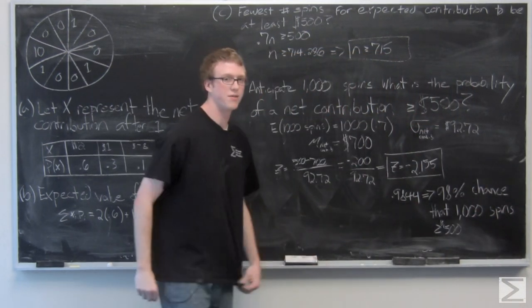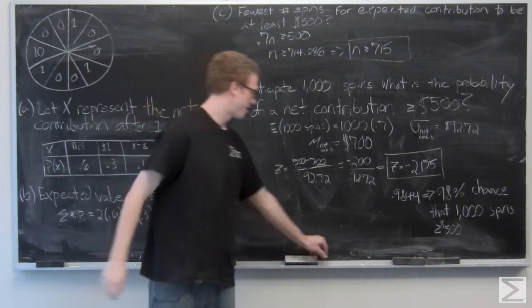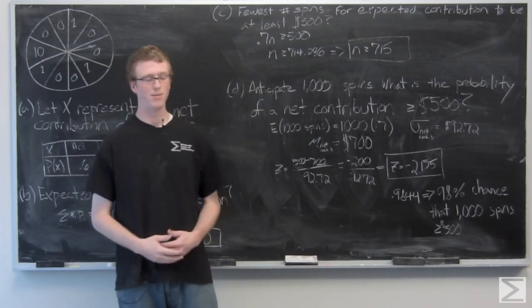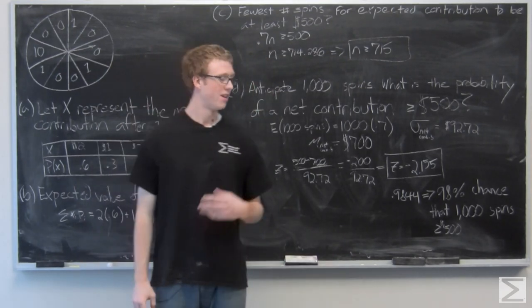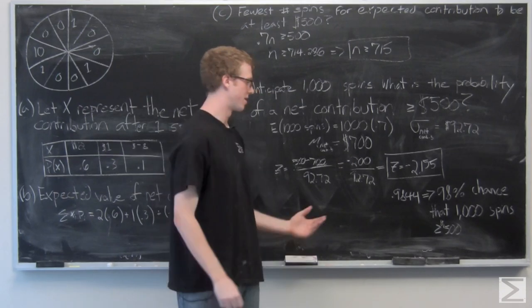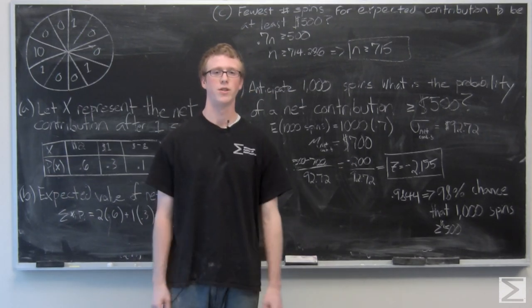So that 0.9844 z-score tells us that we have a 98.44 percent chance that a thousand spins is going to generate over $500 for the charity.